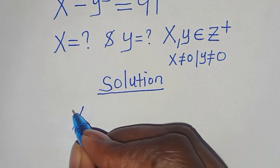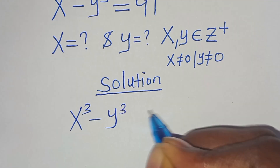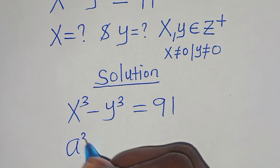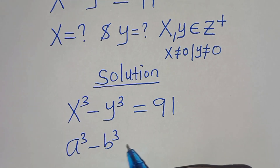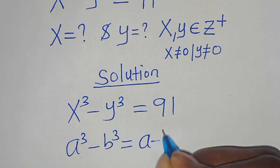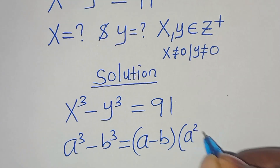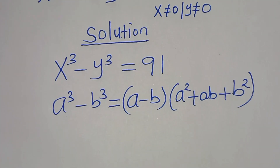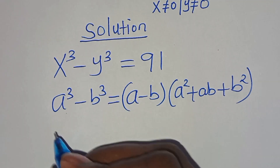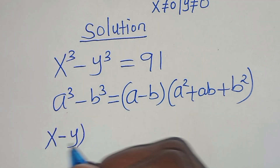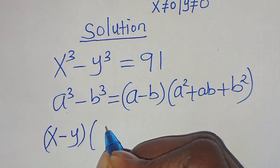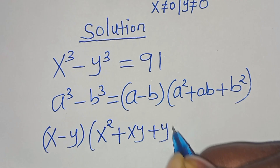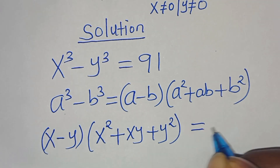We have x to the power of 3 minus y to the power of 3, this is equal to 91. This is in the form of a³ minus b³, which is the difference of two cubes, which you can express as (a minus b) times (a squared plus ab plus b squared). Applying this identity, we have (x minus y) times (x squared plus xy plus y squared) equals 91.